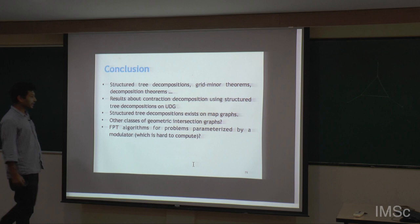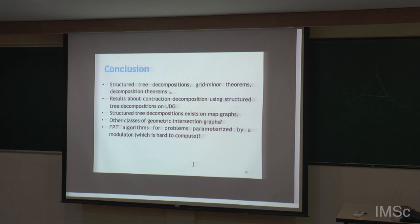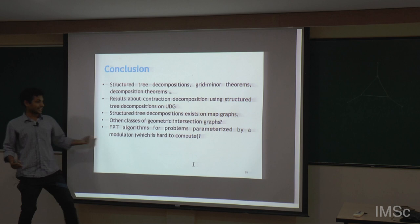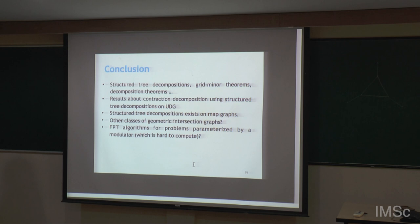Can we get this kind of tree decomposition for other graph classes? At the very first we saw an FPT algorithm for vertex cover parameterized by chordal vertex deletion set, where the modulator is not given as input. There is an FPT algorithm for it but with bad running time. An open question is: can we have a modulator that is very hard to compute — say W1 or W2 hard — but still get an FPT algorithm for vertex cover or another problem parameterized by that modulator, even when the modulator is not given as input?